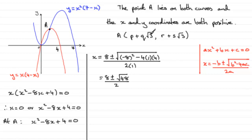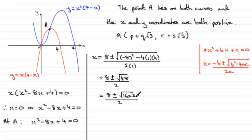We're getting a clue that it involves root 3, which means 3 should go into 48 — and indeed it does, 16 times. So we can write this as 8 plus or minus the square root of 16 multiplied by 3, all divided by 2. Using the surd rule, root of a product splits into root 16 times root 3. Root 16 is 4, so we get 8 plus or minus 4 root 3, all over 2.